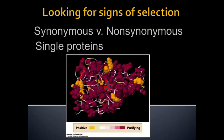Different parts of a protein may be under different selection pressures. Some parts of an enzyme might be under strong positive selection — doing something new — while the rest of the protein is conserved under strong purifying selection. So we can look at this not just from gene to gene, but even from one region of the gene versus another. It's a very useful process.